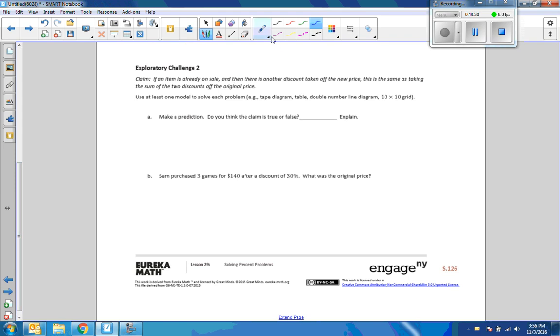Exploratory challenge 2. If an item is already on sale, and then there's another discount taken off the new price, this is the same as taking the sum of the two discounts off the original price. That is our claim. I already know the answer to this. So, I'm not going to make a prediction. I already know whether it's true or false. We're going to go back to that. So, let's just start off by seeing if it is true. Sam purchased three games for $140. So, disregard that three. It has nothing to do with the problem.